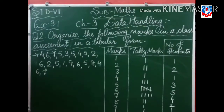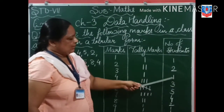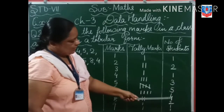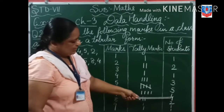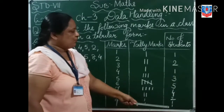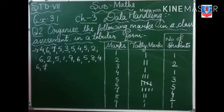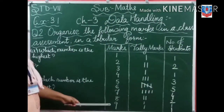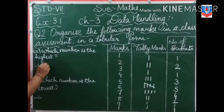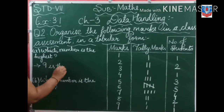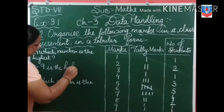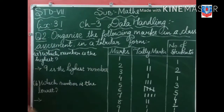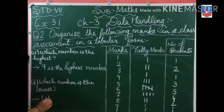Now you can check this. One plus two is three, three plus one is four, four plus three is seven, seven plus five is twelve, twelve plus four is sixteen, sixteen plus two is eighteen, nineteen, and twenty. Which number is the highest? Nine — nine is the highest number. Which number is the lowest? One — one is the lowest number.